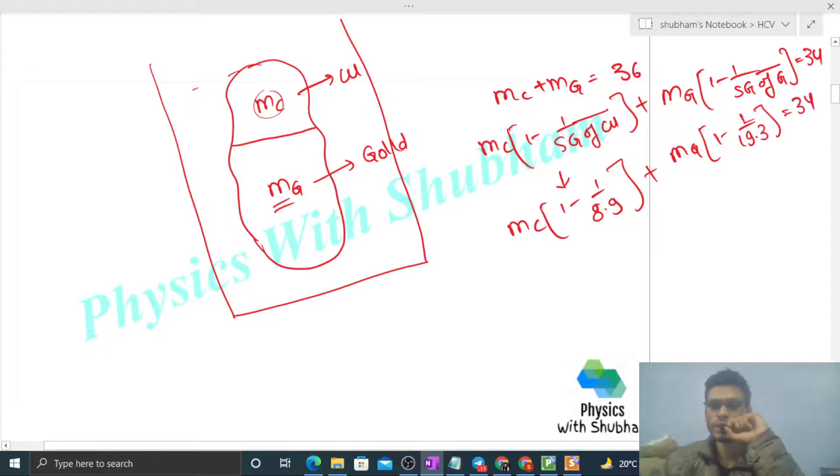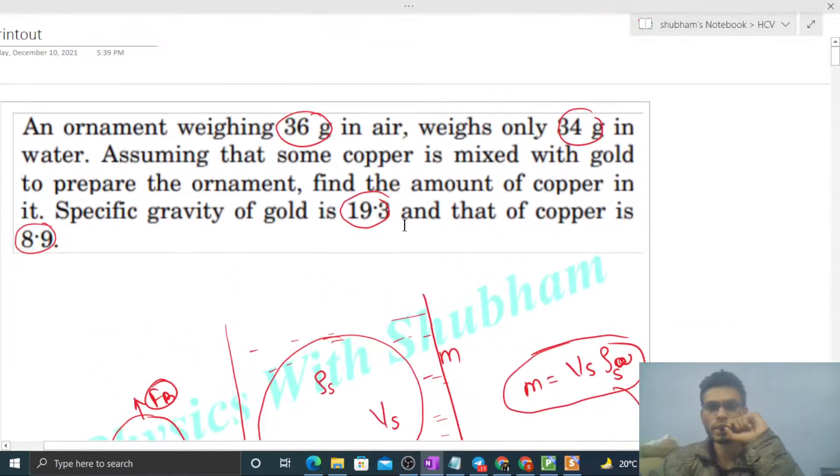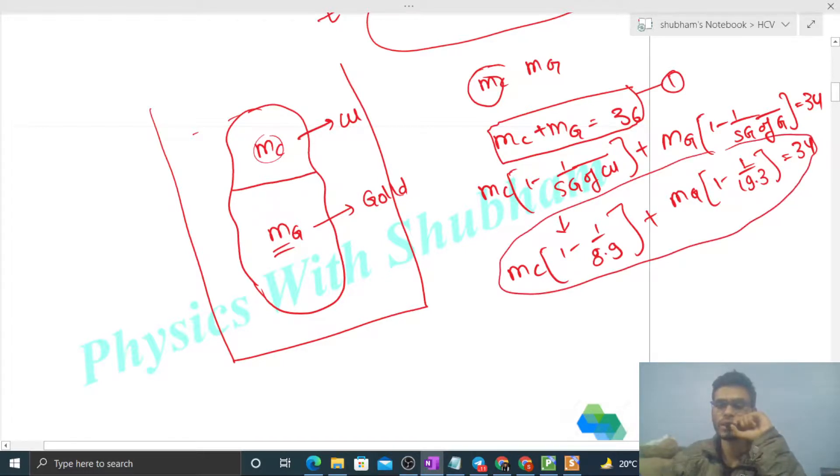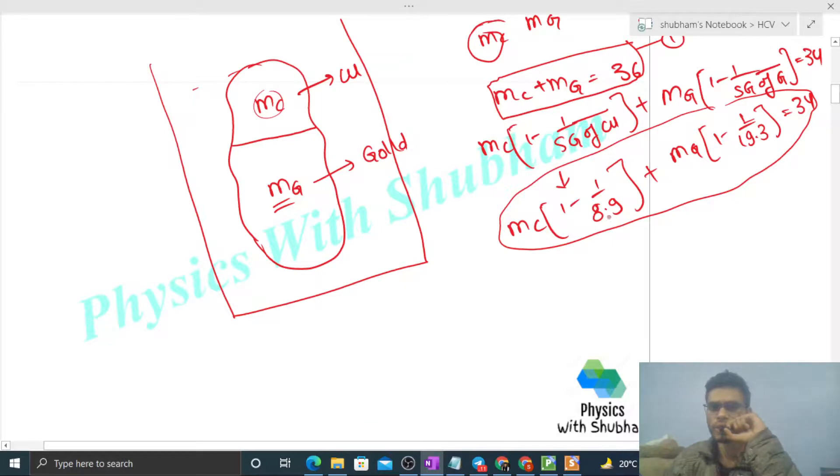Let me check first: 19.3 is given and 8.9 is given. Now you see we have two variables, mc and mg, and we have to find the value of mass of copper. We have two equations. Let's simplify. It will be 7.9 divided by 8.9 times mc plus 18.3 divided by 19.3 times mg equals 34.